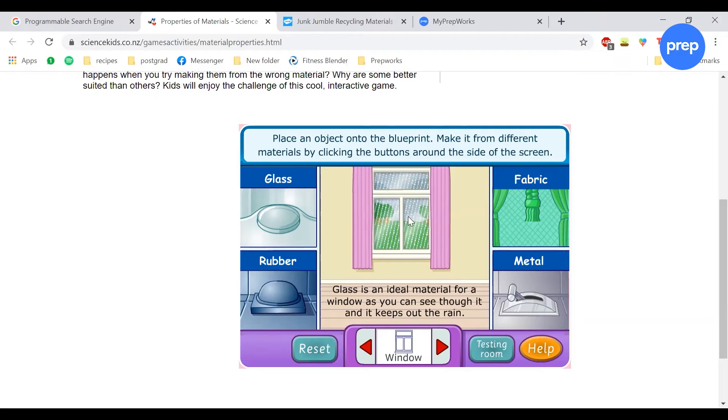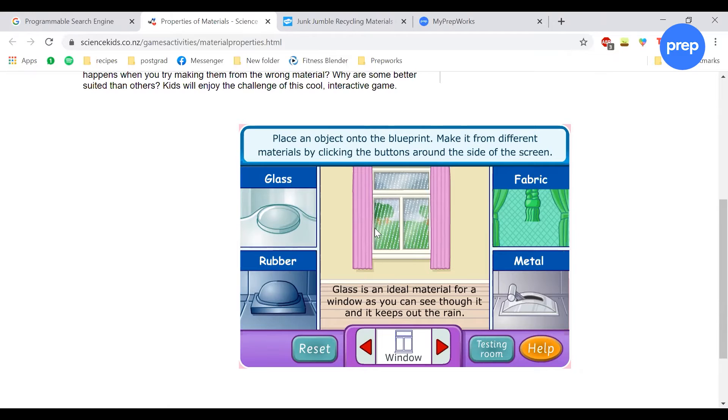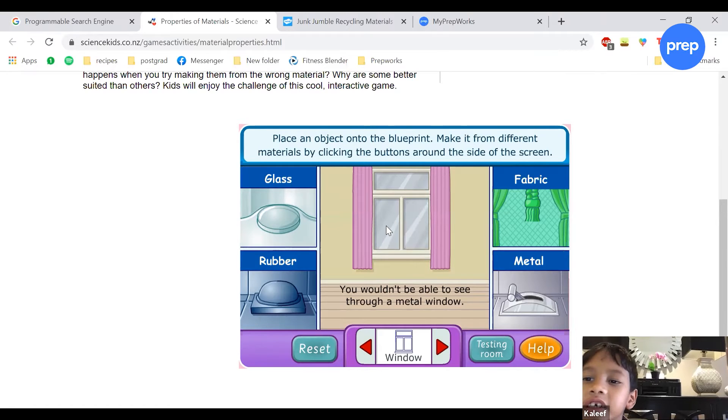through it. So that's why it's good for a window. Khalif, you said it won't let water in, right? It won't let the rain in. So what is that word? Waterproof. Waterproof, very good. So glass is transparent, which makes it good for a window. Let's try metal. So what's wrong with the metal window? You cannot see, you can't